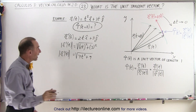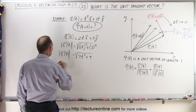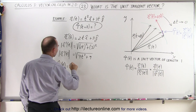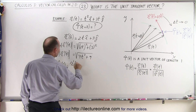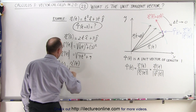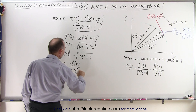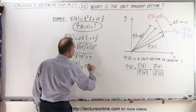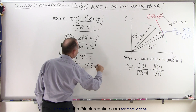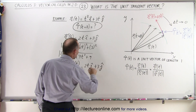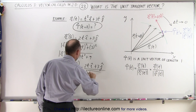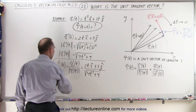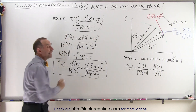Now defining the unit tangent vector: T-hat as a function of t is equal to the derivative of the position vector divided by the magnitude of the derivative of the position vector. In this case that's equal to (2t i + 3 j) divided by the square root of 4t² + 9. That is what we call the unit tangent vector.